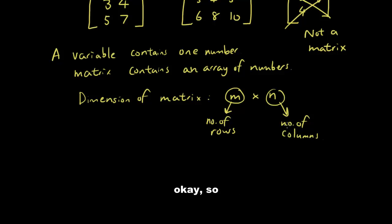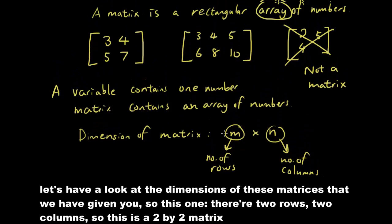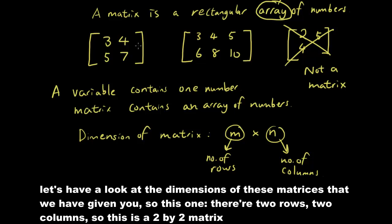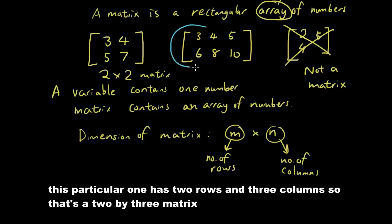Okay, so let's have a look at the dimension of these matrices that we have given you. So this one, there's two rows, two columns. So this is a 2 by 2 matrix. And this one here, this particular one here has two rows and three columns. So that's a 2 by 3 matrix.